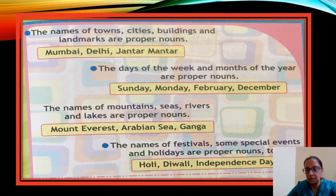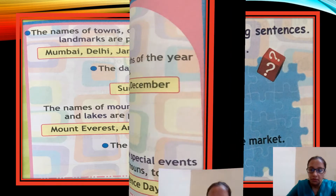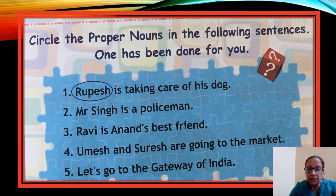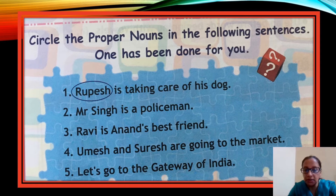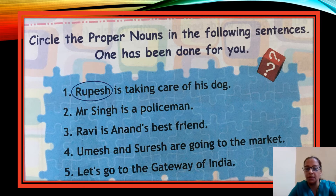Now let's move on to the exercise: circle the proper nouns in the following sentences, one has been done for you. Number one: 'Rupesh is taking care of his dog.' Rupesh is a particular name, so it is a proper noun. Dog is a common noun. Number two: 'Mr. Singh is a policeman.' Mr. Singh is a particular name, so we will circle Mr. Singh.